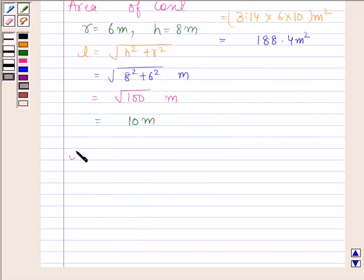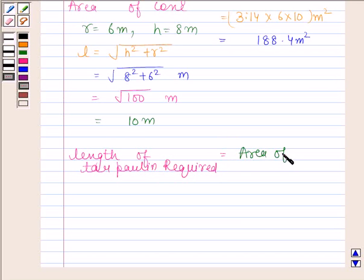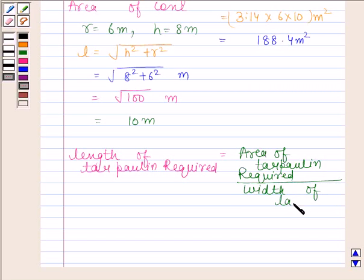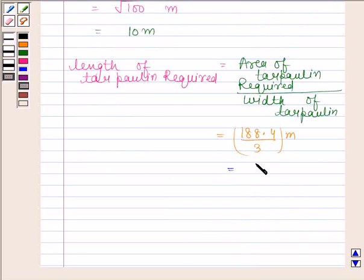Now we will find length of tarpaulin. Length of tarpaulin required equals area of tarpaulin required. The area of tarpaulin required equals the curved surface area of the cone, that is 188.4 meters squared. We are given that width of tarpaulin is 3 meters, so this equals 62.8 meters.